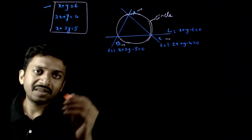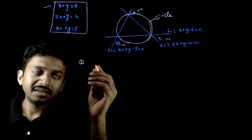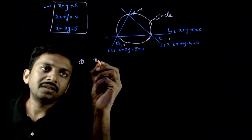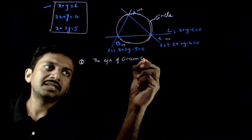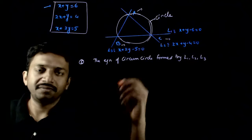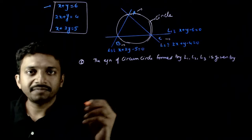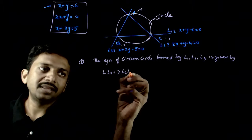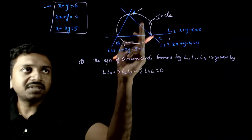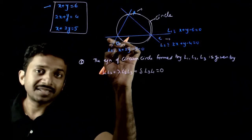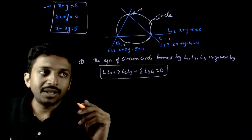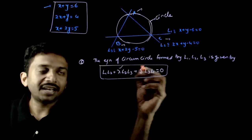The second way — a more intelligent method — is: the equation of the circumcircle formed by L1, L2, L3 is given by L1·L2 + λ·L2·L3 + δ·L3·L1 = 0. So the circumcircle of the triangle formed by these three lines is given by L1·L2 + λ·L2·L3 + δ·L3·L1 = 0, where λ and delta have to be found out.